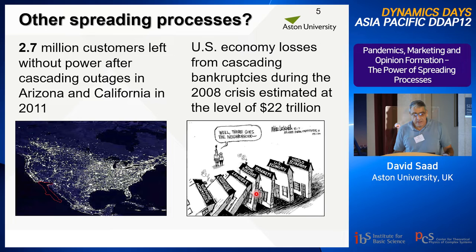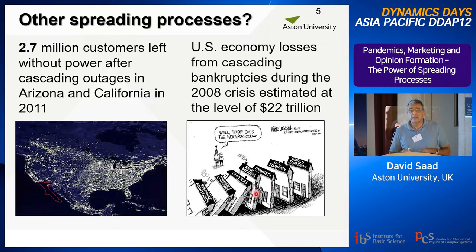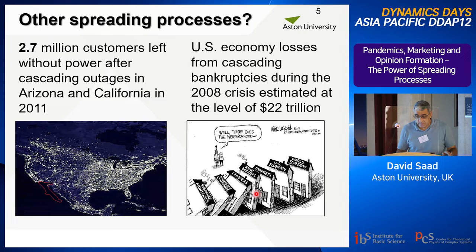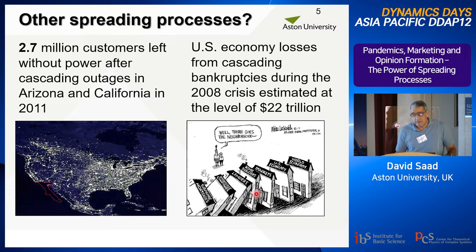But not only that — epidemic spreading is not only about diseases. For instance, in the US, there were power outages that caused 2.5 million people to be left in the dark in 2011. This works very much like epidemic spreading because each power plant that cannot supply the goods will simply collapse and pass on the request to another one, which will then be overloaded and will collapse as well. Similarly, the US economy suffered significant losses in the crash of 2008, which operates in a similar way.